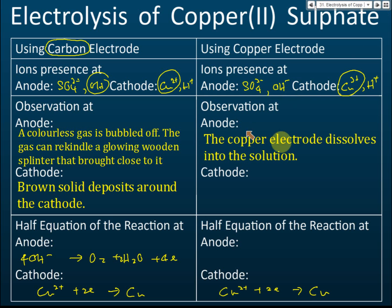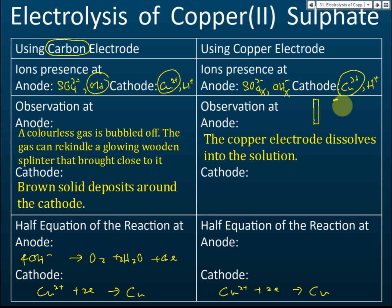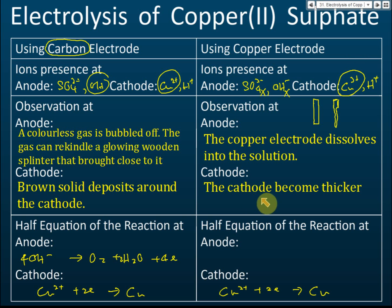At the anode, both sulfate and hydroxide are not selected to be discharged. Instead, the copper electrode itself takes part in the chemical reactions — the copper electrode dissolves into the solution. Initially the copper electrode looks normal, but after the reaction it corrodes and becomes thinner. At the cathode, the observation is still the same, but the cathode becomes thicker — I'll explain why later.